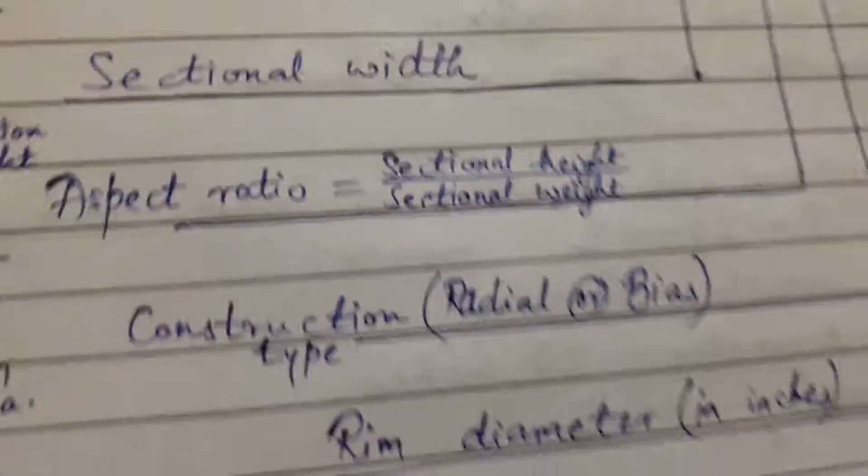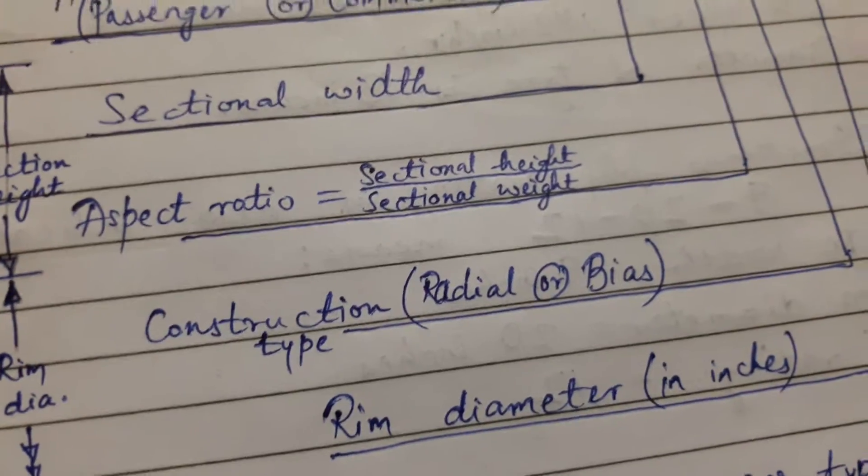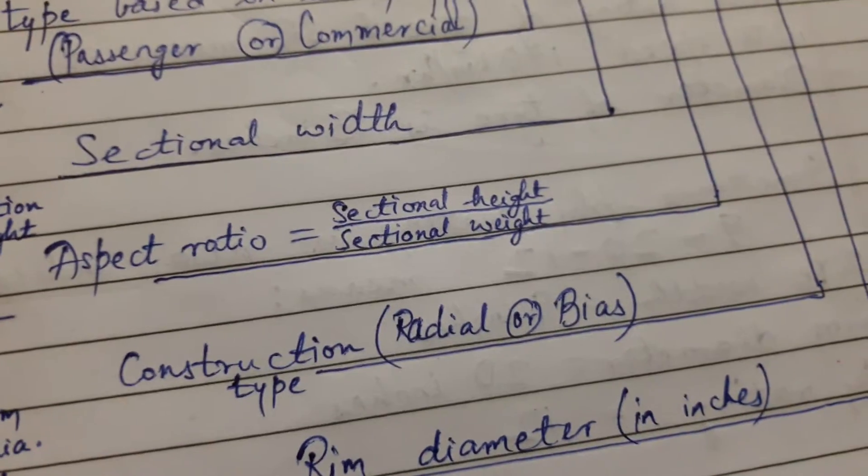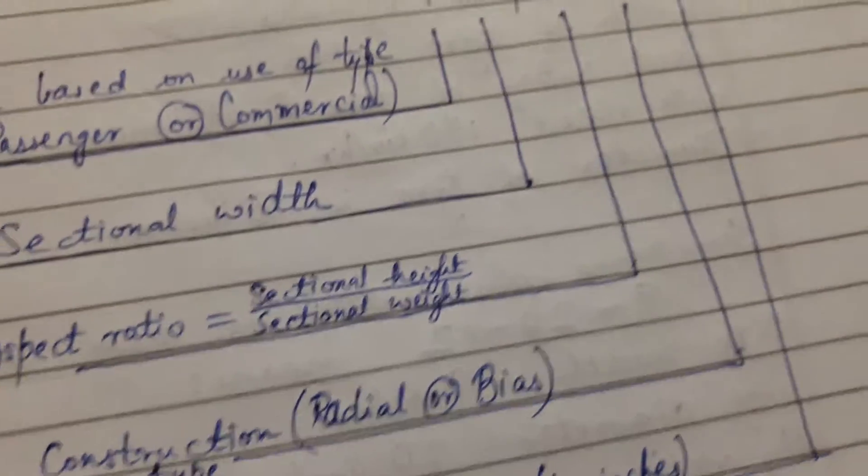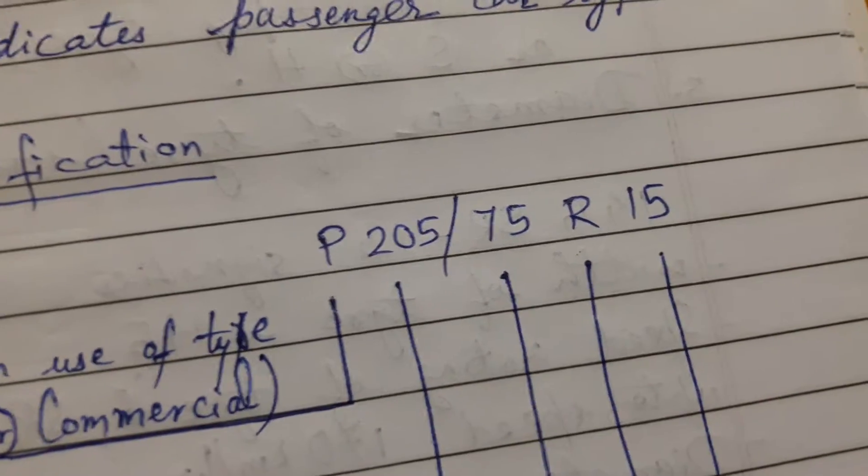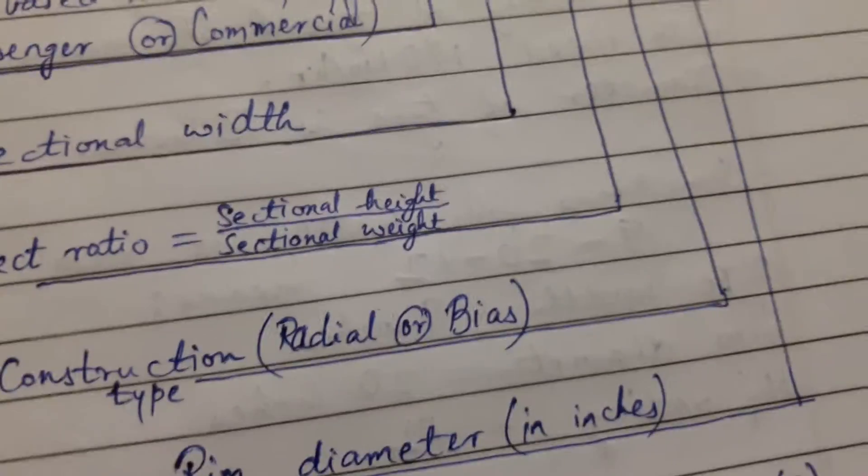As we have studied earlier, there are two types of construction type: one is radial and another is bias. So here it is written R, means the construction type for this tire is radial.